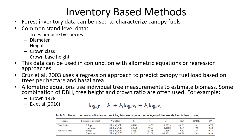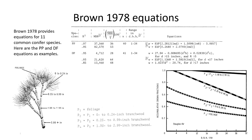Seth X's PhD work involved cutting down and dissecting trees to build allometric equations. His equation uses coefficients from a table — for example, to calculate Douglas-fir foliage load, you select the appropriate b₁ and b₂ coefficients. Brown 1978 became one of the more popular approaches and forms the basis of FVS's canopy fuel calculations.